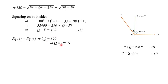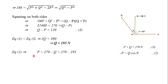From 2Q = 390, we get Q = 195 Newton. Substituting back into equation P + Q = 270, we find P = 270 − 195 = 75 Newton.